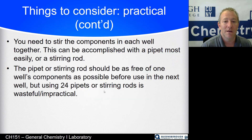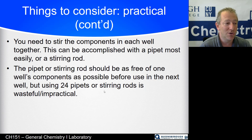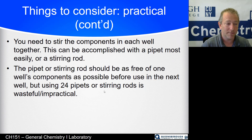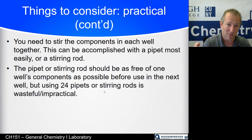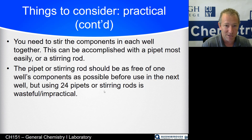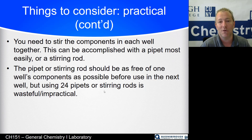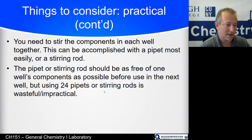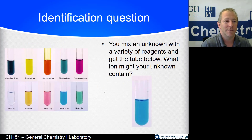Practically speaking, you need to stir each component. You can do that with a stirring rod — clean it off between wells — or use a pipette and suck the liquid in and out in each well. Just make sure you blow it out as much as possible before moving to the next one. You're not going to use 24 separate pipettes or stirring rods — just make sure it's as clean as possible. Don't make the lab take forever cleaning the pipette with soap and water each time; just rinse it off.